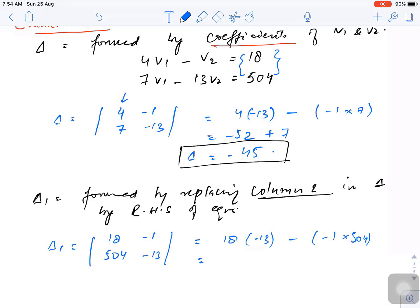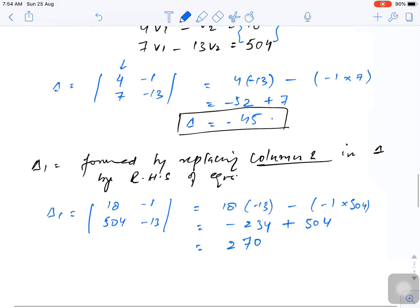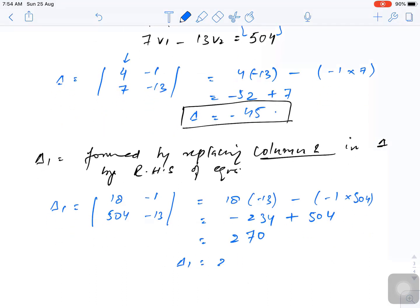So we would get minus 234 plus 504. The answer is 270. Your delta 1 is 270.